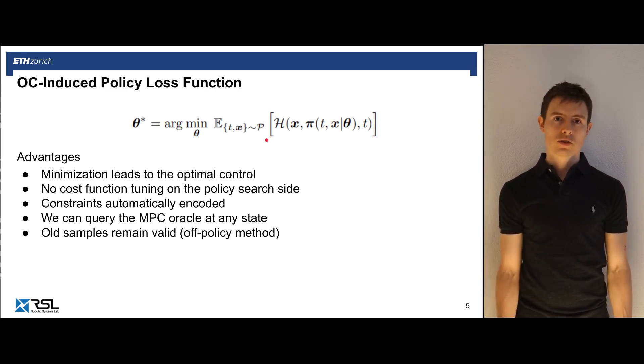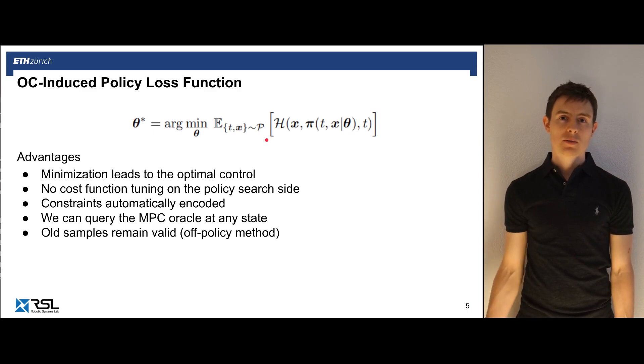Furthermore, the control Hamiltonian includes and explicitly encodes constraints in the problem. And we can also query the MPC Oracle, the MPC demonstrations at any state that we would like. Furthermore, since the MPC is not aware that any learning is performed on it afterwards, it is always providing us with optimal policies which can be reused time and time over again. They are not adapted to the student.